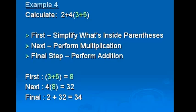In example 4, if we were to calculate 2 plus 4 times, open bracket, 3 plus 5, close bracket, the first step would be to simplify what's inside the parenthesis. Next, we'll perform a multiplication, and then the final step would perform an addition. So first, it would be 3 plus 5, which is equal to 8. Next, it would be 4 times 8, which is equal to 32. And then finally, it would be 2 plus 32, which is equal to 34.